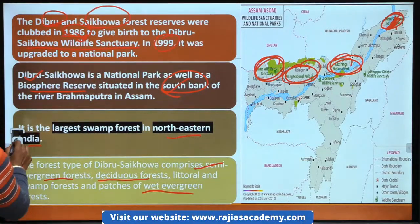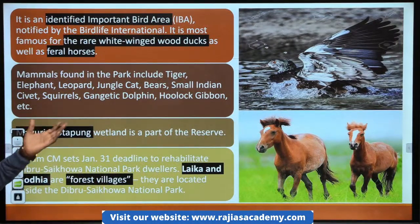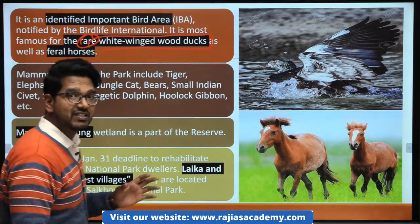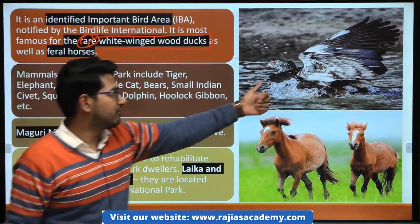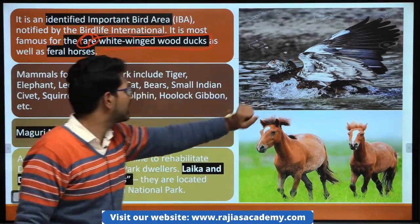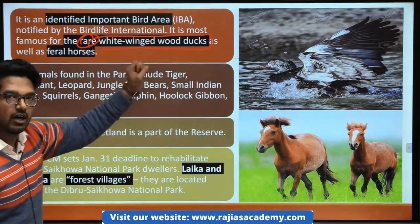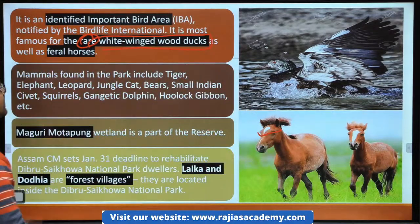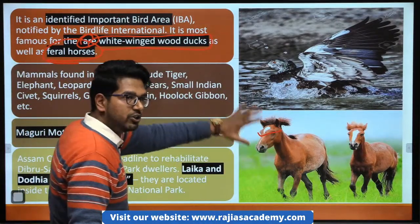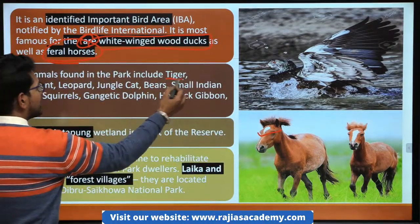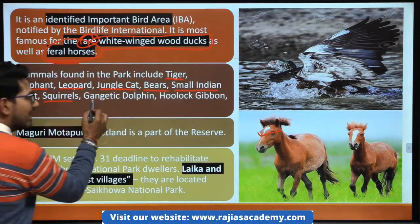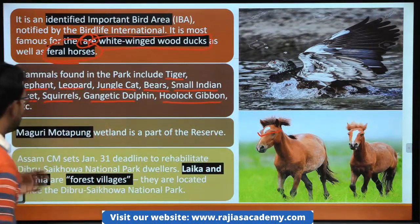Certain animal species which we should know here: the most important one is the rare white-winged wood duck — this is important because it is very rare and it is found here. There is one more important species — feral horses, jo ki is area mein milte hain, aapko Dibru Sikhowa National Park mein. Other species like tiger, elephant, leopard, jungle cat, bear, small Indian civet, squirrel, Gangetic dolphin, hoolock gibbon, gaur etc. yahan par milte hain.